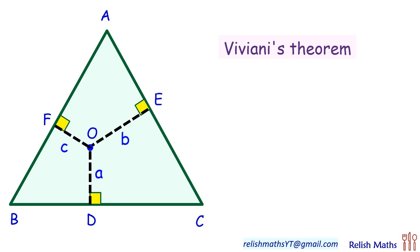For this we will be using Viviani's theorem, which states that in an equilateral triangle from a random point, if the perpendicular distances are a, b, and c units, then the height of this equilateral triangle is given by a plus b plus c. Let's first see the proof of Viviani's theorem and then we will use it to find our answer.